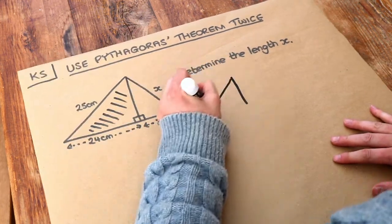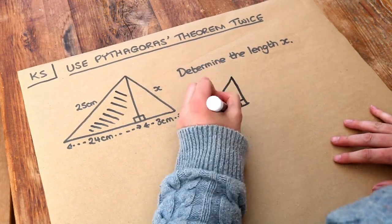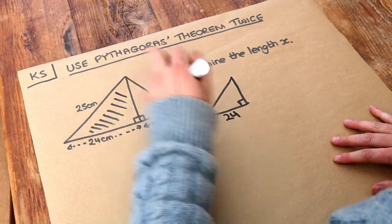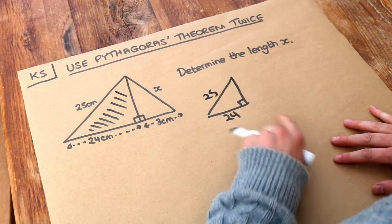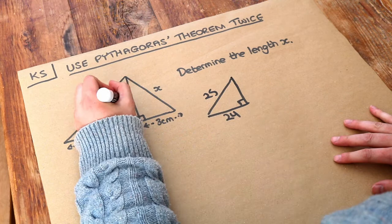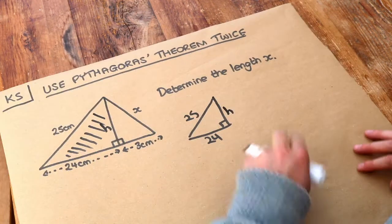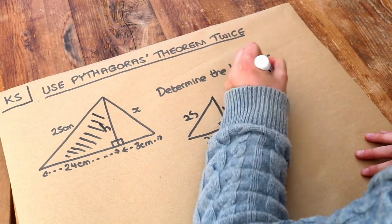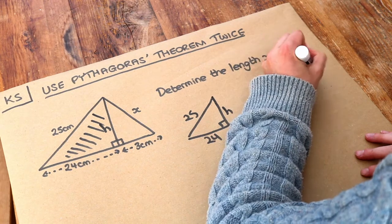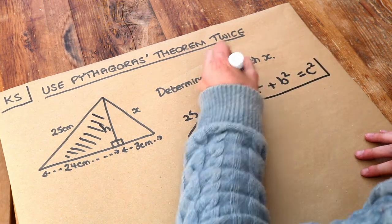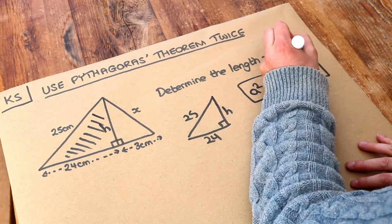So let's think about that triangle separately. We've got the 24 at the bottom, the 25 is the hypotenuse, and we want to find this height here. Let's call that height h for the moment. And then remember Pythagoras theorem, a squared plus b squared equals c squared, where c is the hypotenuse of the triangle.